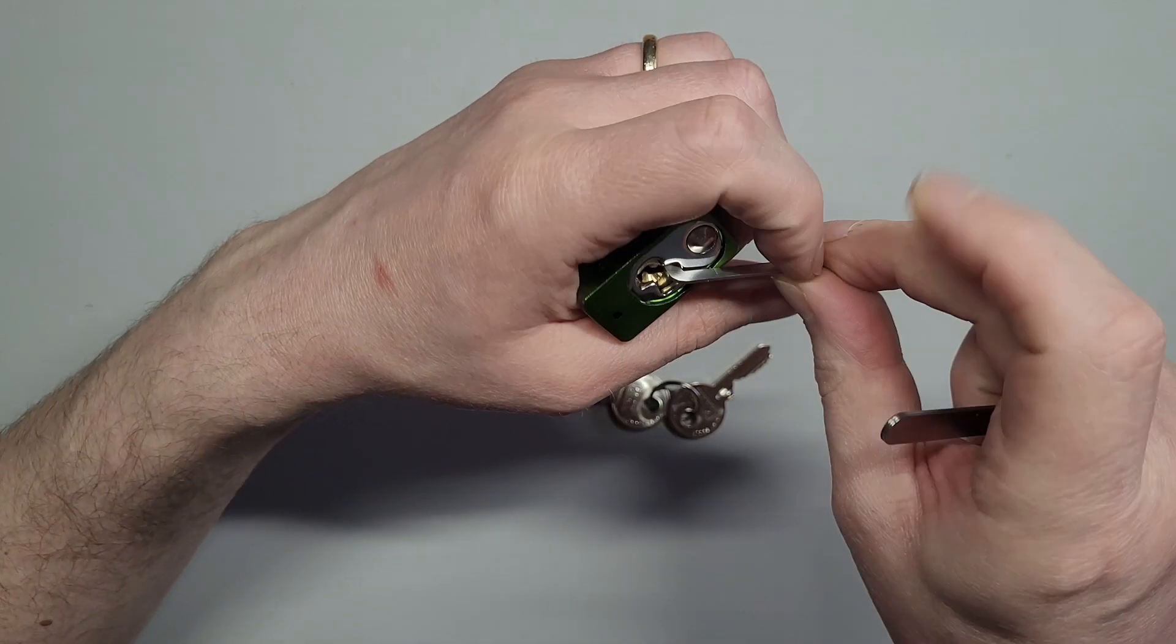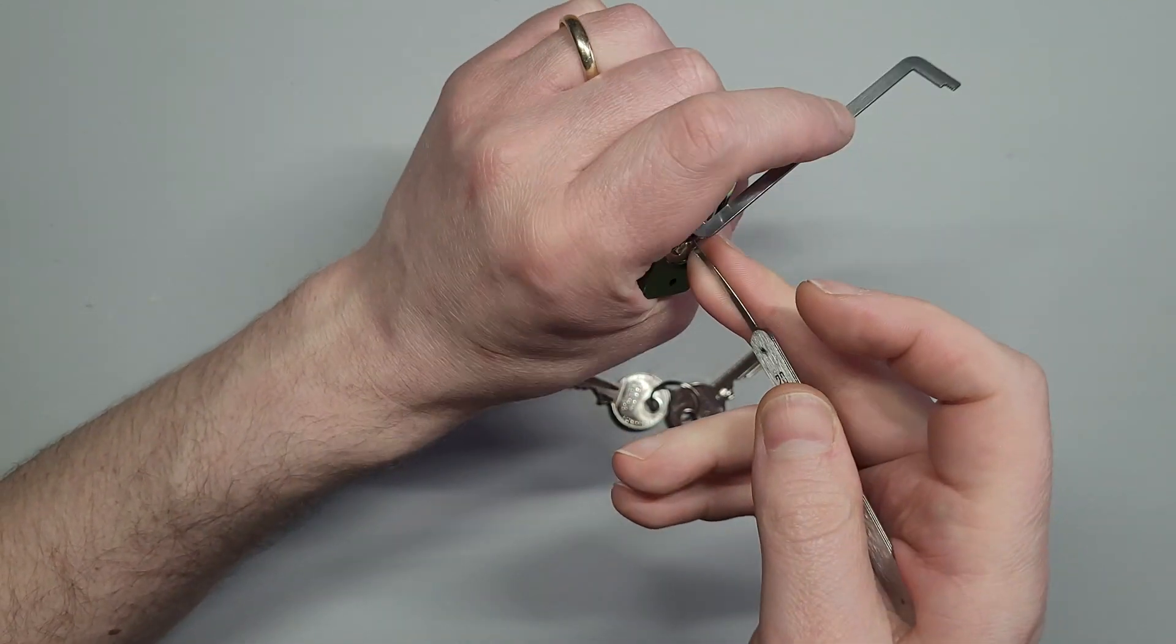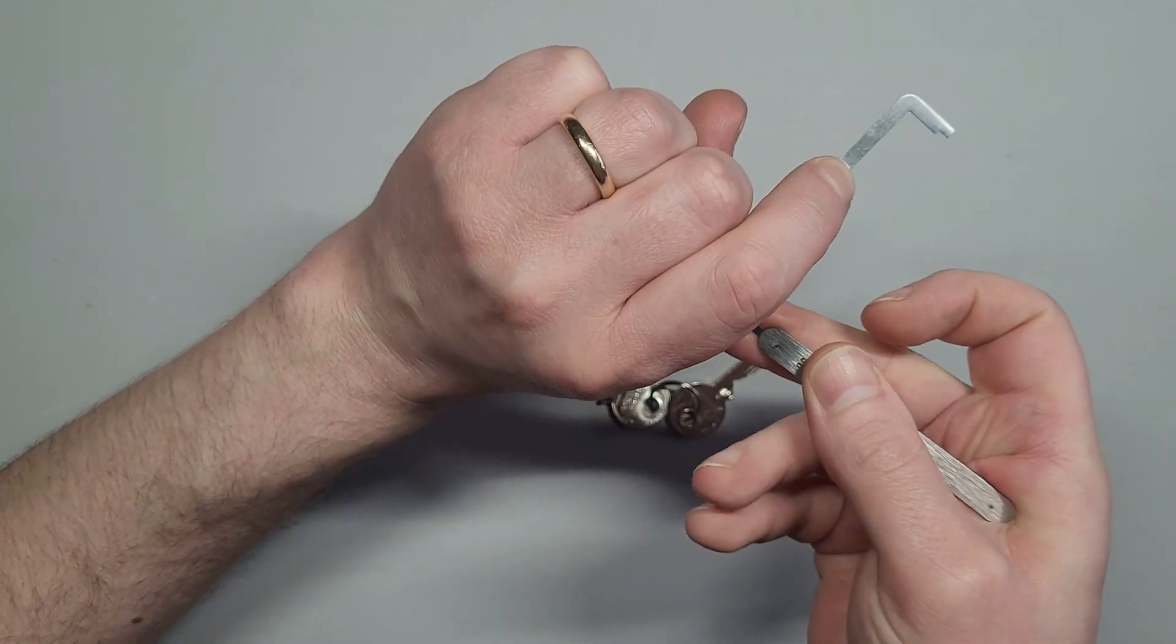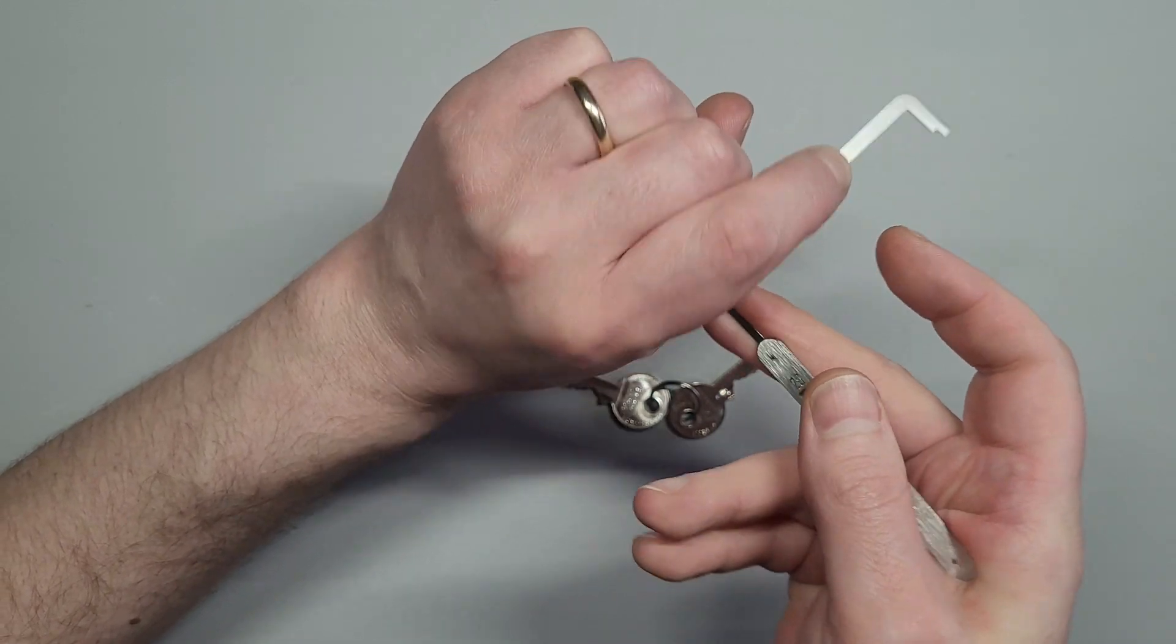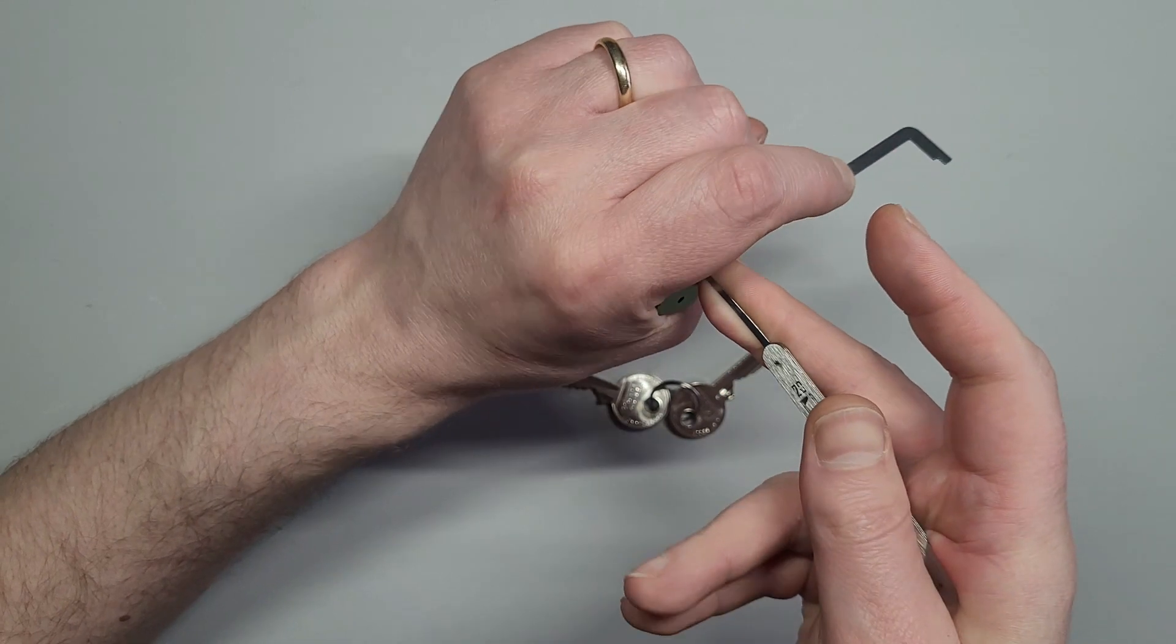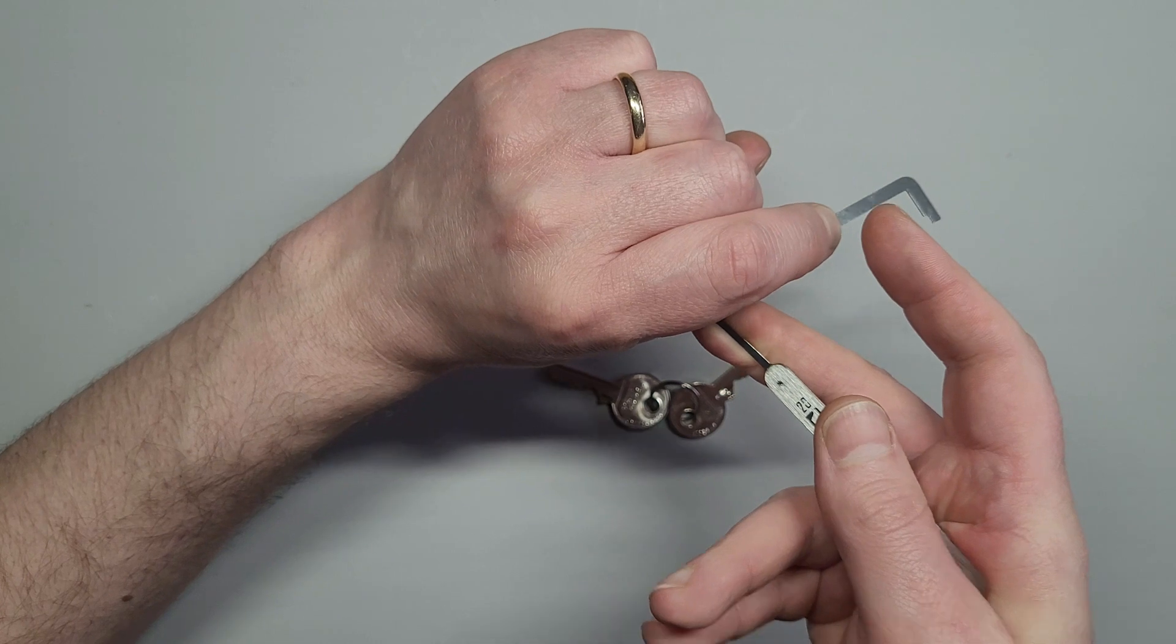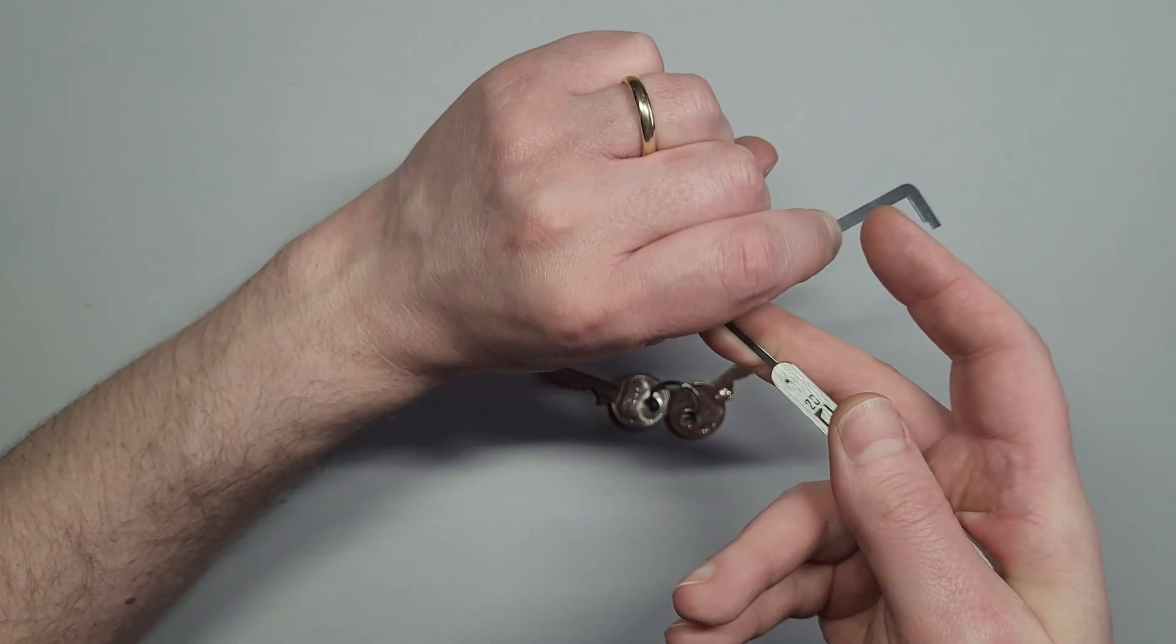So I'm using a 40,000th covert instruments turning tool and a 20,000th covert instruments short hook, and we've got a few clicks already. Sounds like we've got plenty of security pins in here with all the clicking going off and we must nearly be there.